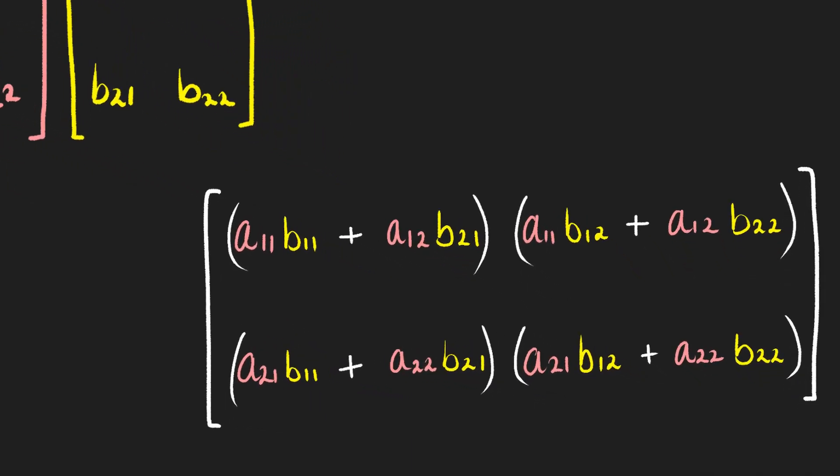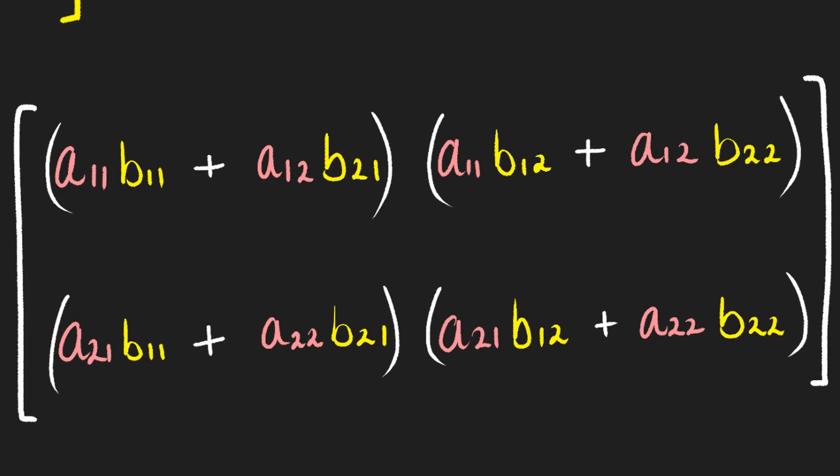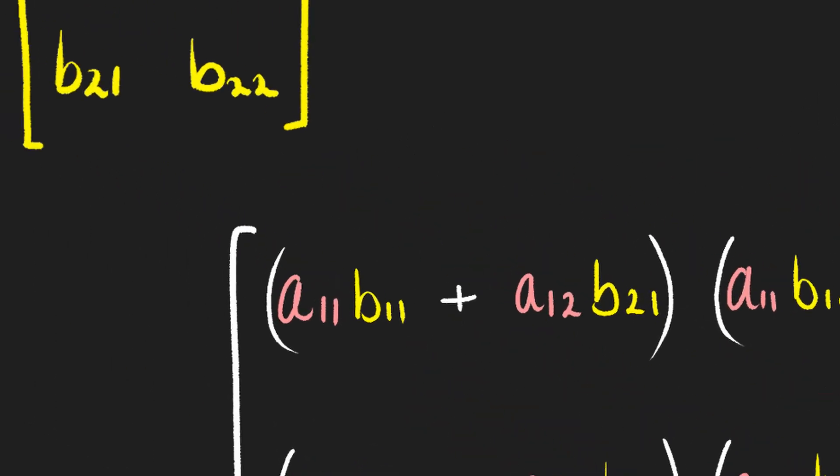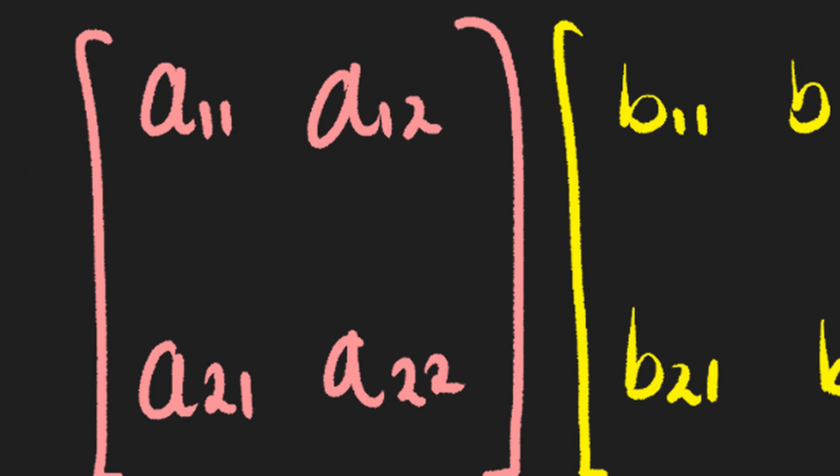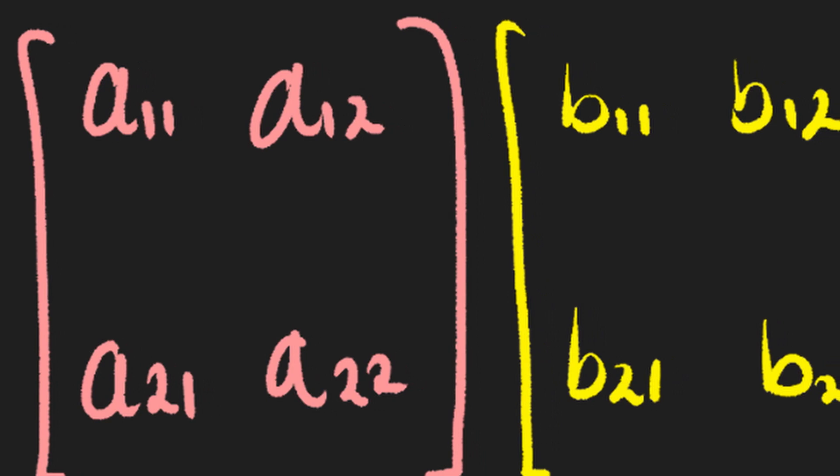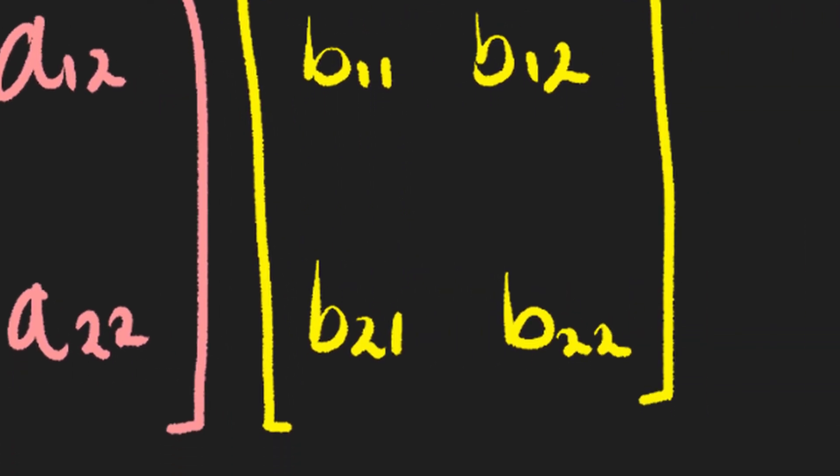What we notice is that the elements in the combined matrix look a little bit like we're summing the products of the elements of the rows from the first matrix and the columns from the second matrix.